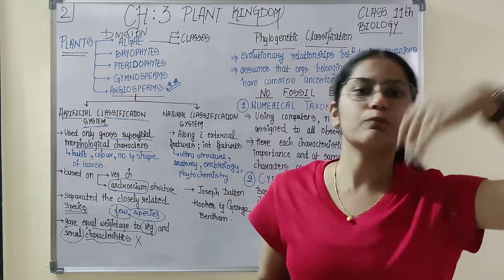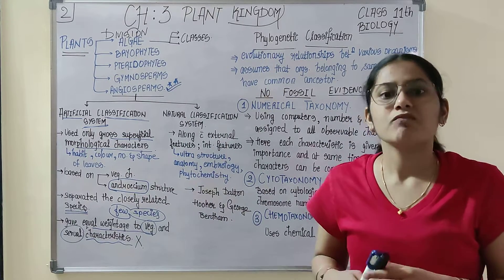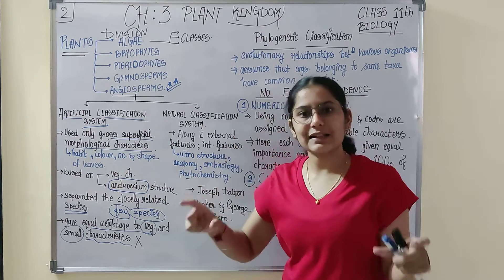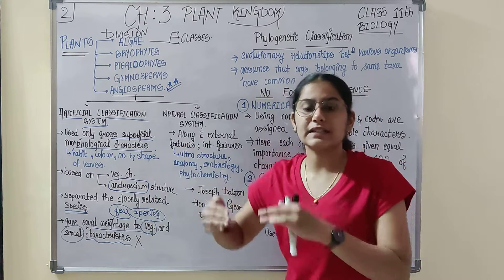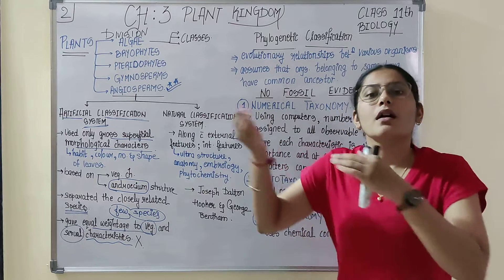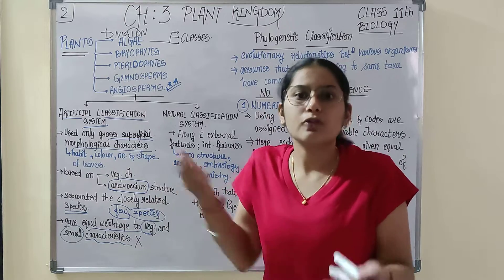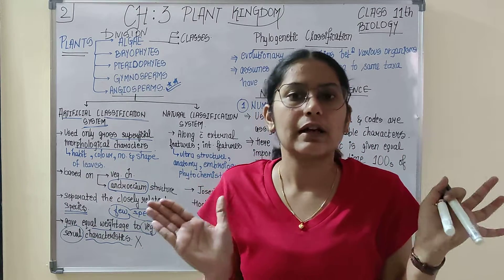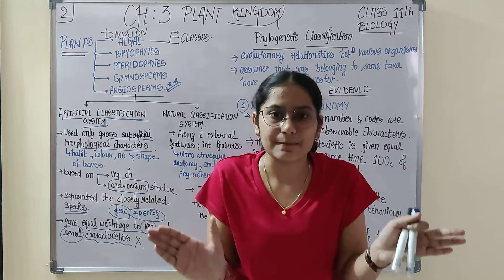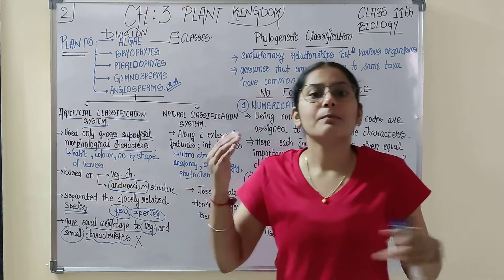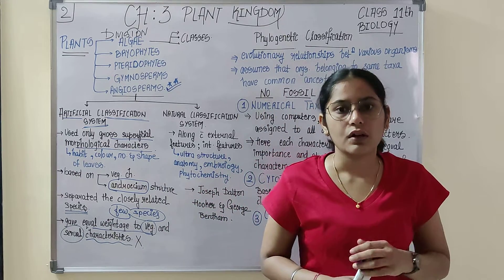Moving into sexual characteristics, this system includes vegetative characters as well as sexual characteristics, giving equal weightage to both. But there is one drawback: we cannot give equal weightage to both sexual and vegetative characteristics because vegetative characters may vary with environmental changes, whereas sexual characteristics will not. So this is the drawback of the artificial classification system.